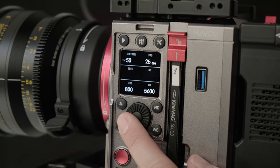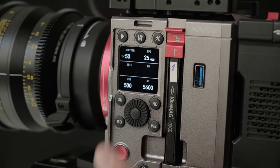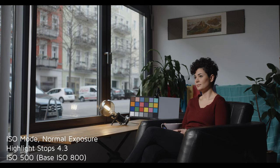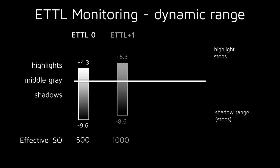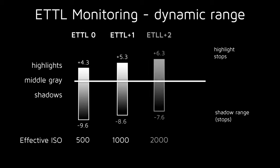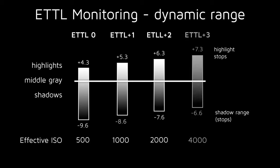ETTL monitoring takes advantage of exposure settings such as ISO 500, which offer lower noise and other image quality advantages. ETTL, which means exposed to the left, essentially means choosing to treat middle grey as darker than normal. This means there is more range in the highlights, less range in the shadows, and a higher effective sensitivity. This works because the MAVO LF performs well in its shadow range, especially at lower ISOs such as 500.